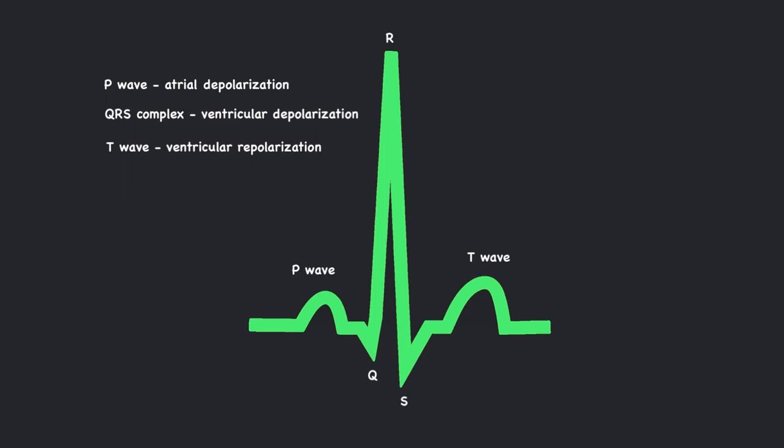There are two segments seen on the EKG. The first segment, the PR segment, measures the time it takes for the electrical impulse to travel from the SA node through the atria and reach the AV node. It reflects the delay at the AV node, allowing the ventricles to fill with blood.